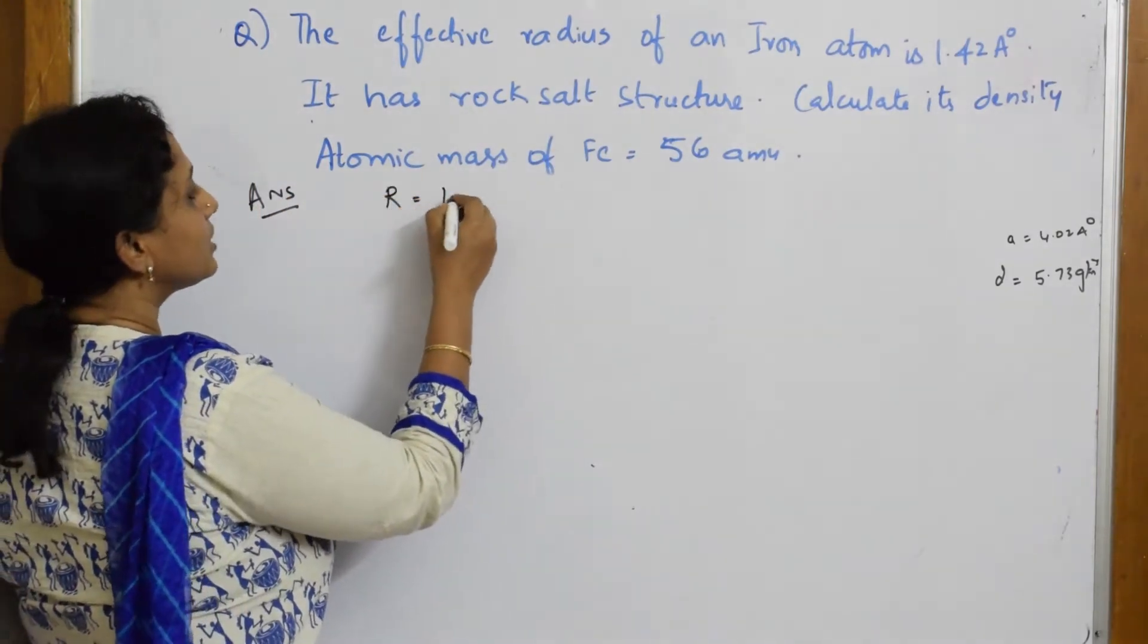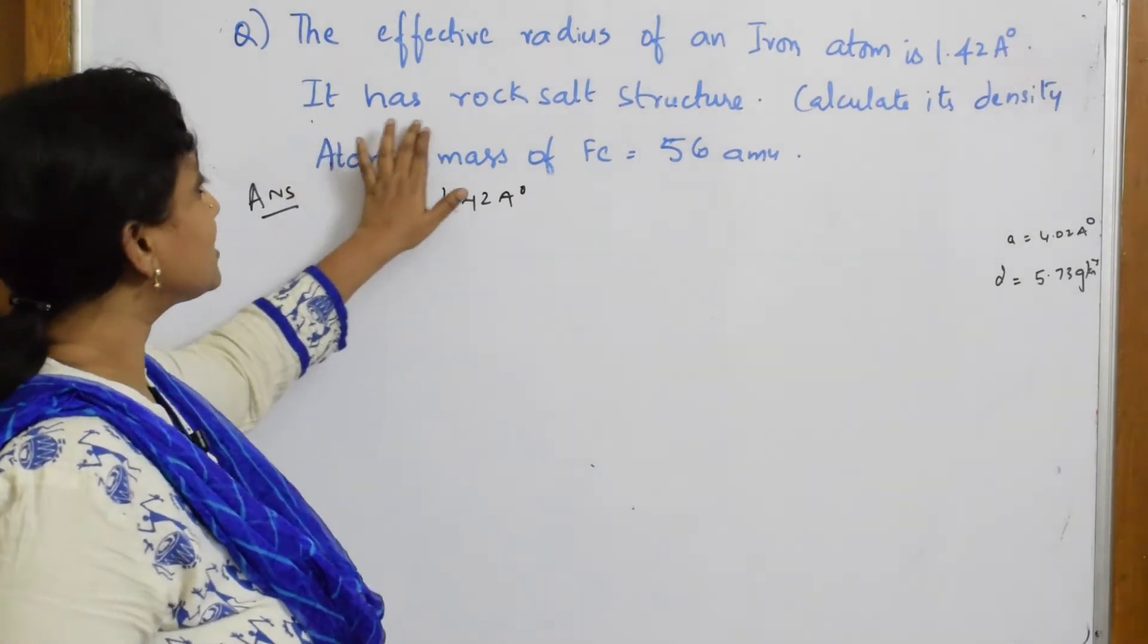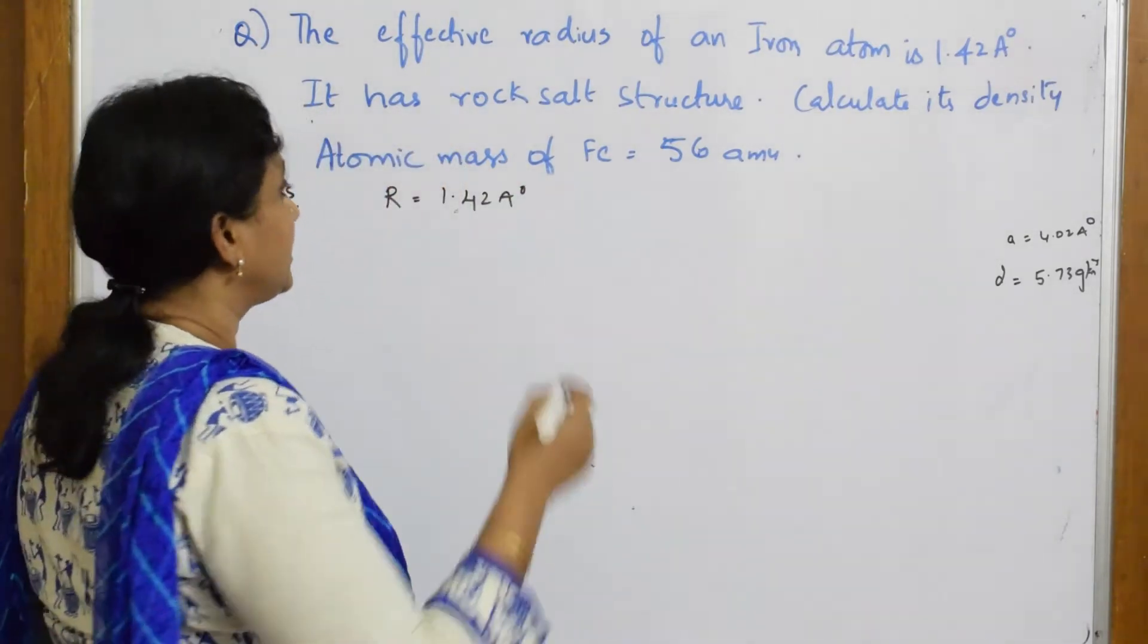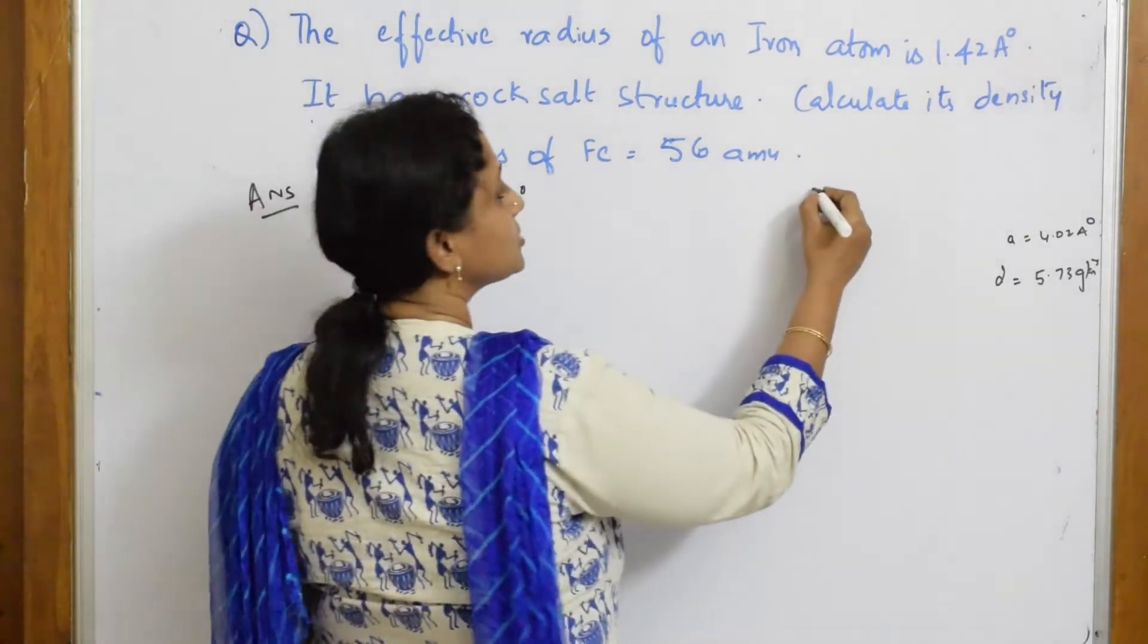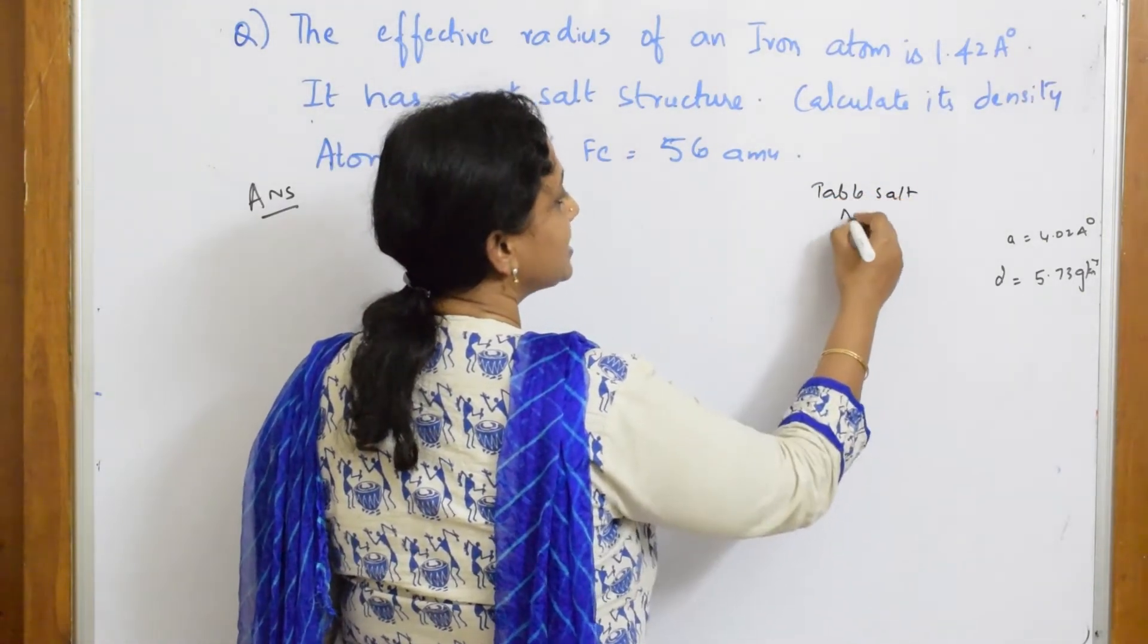Right? R is given to me 1.42 angstroms. They said it has a rock salt structure. What is rock salt? This is your normal table salt, yeah, table salt NaCl.